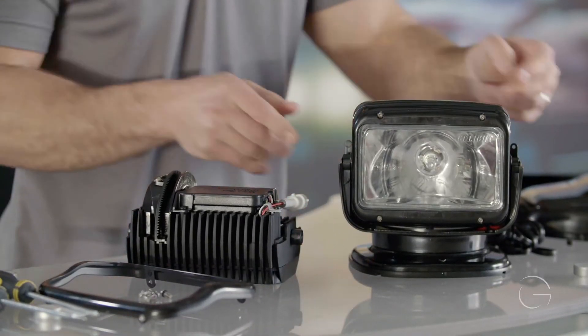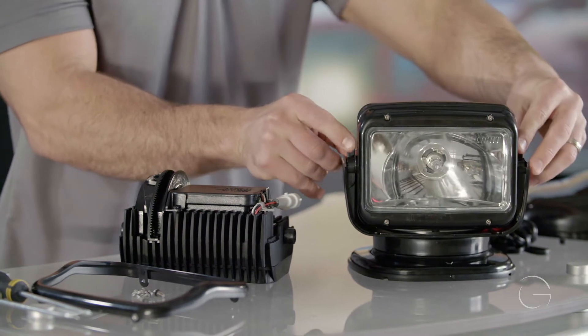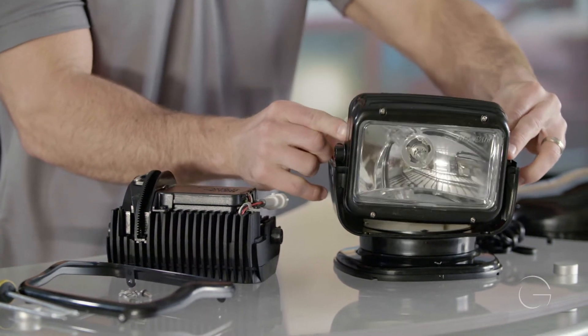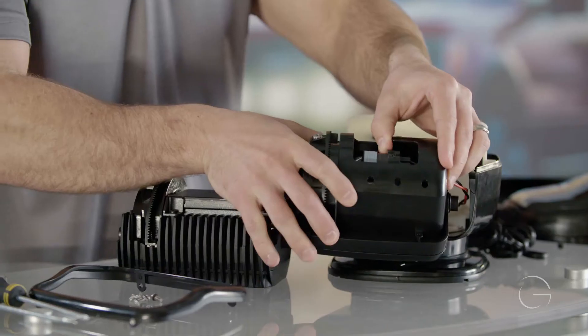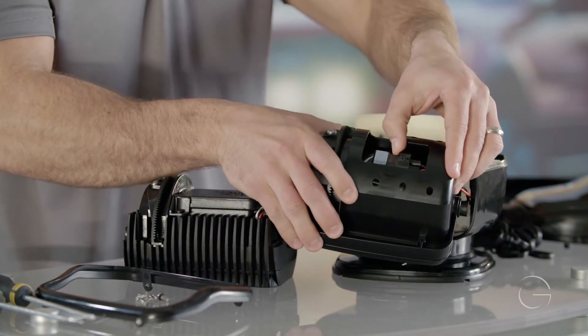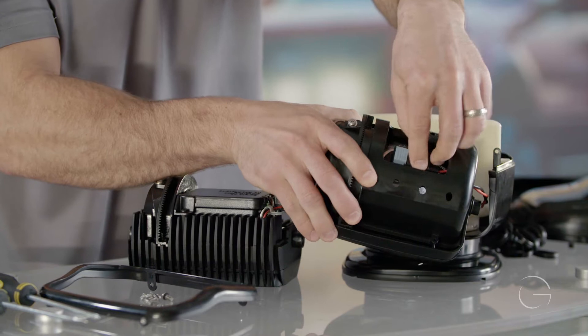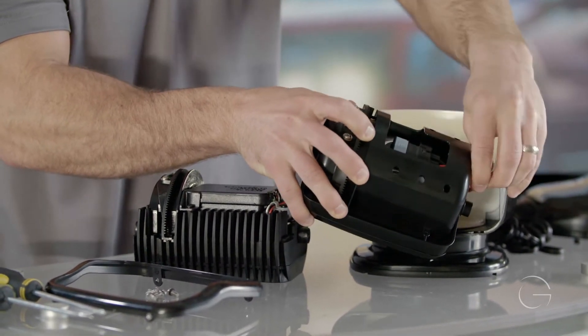To do this we will need to remove the bulb lens and reflector. Pull out with your thumbs, pop that out. Then we will remove the bulb connector. To do that lift the tab and push the bulb out.